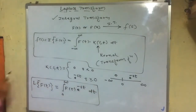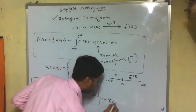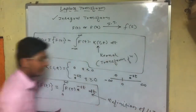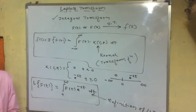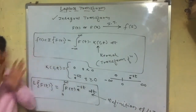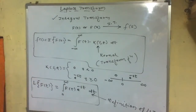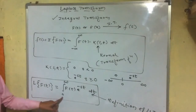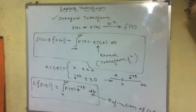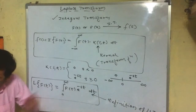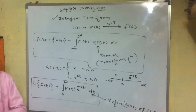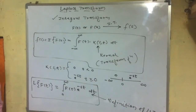So the Laplace of F(t) equals the integral from 0 to infinity of F(t) times e to the power minus st dt. This is the definition of Laplace transform. Whenever you want the Laplace transform of any function, first multiply that function by e to the power minus st, then perform the integration in the limit 0 to infinity.